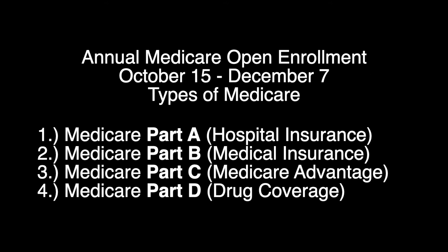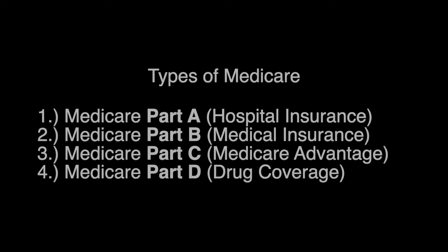Every year there is an annual Medicare Open Enrollment that runs from October 15th to December 7th. During this time frame, beneficiaries can modify their coverage options or start coverage options. For example, if they have Medicare Part A and B, which is original Medicare, they can switch to Medicare Advantage plans. Medicare Advantage plans are known as Medicare Part C. Medicare Part D is prescription drug coverage.